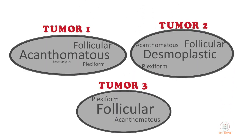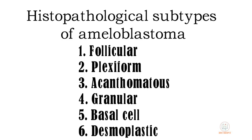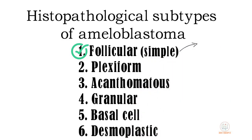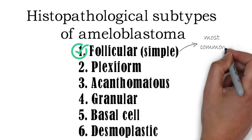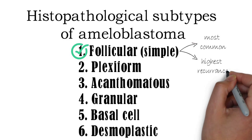A lesion usually shows a mixture of these subtypes and the tumor is classified according to the predominant pattern that is present. Among these six subtypes, the follicular type — sometimes called the simple type of ameloblastoma — is the most common type and also has the highest rate of recurrence.